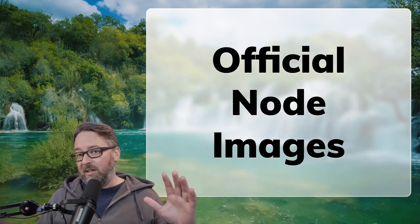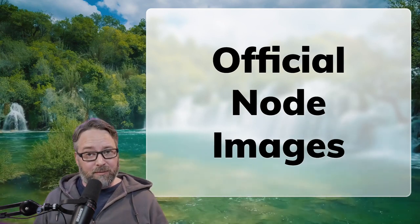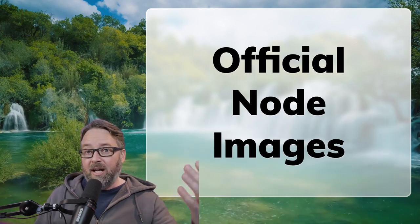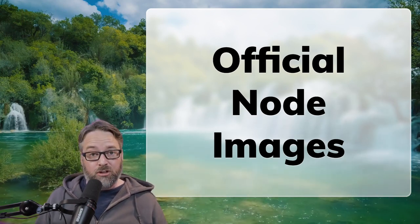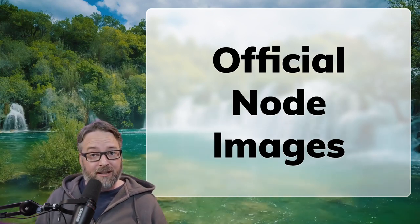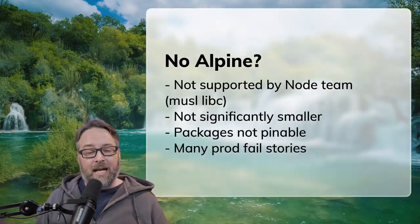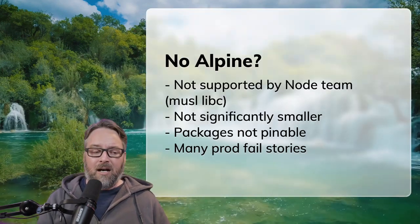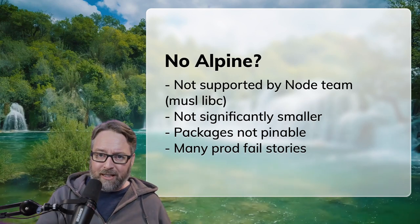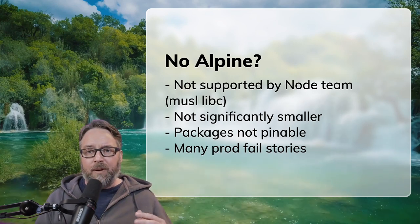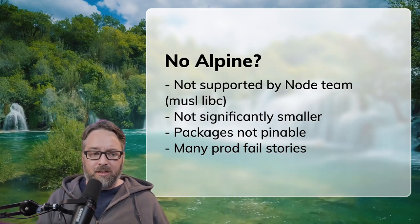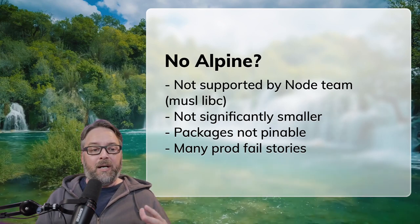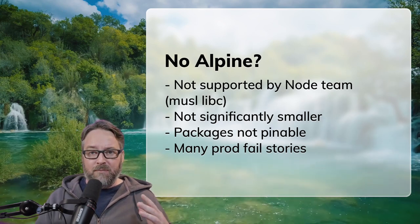This is really talking about the official node image on Docker Hub — you just look up node, the official node. There are at least three or four major choices you can make in there besides just versions. And I'm not an Alpine fan, at least when it comes to programming languages. Alpine is a great minimal distribution. There are a lot of people that are fans of it, but I have many reasons why I don't recommend it.